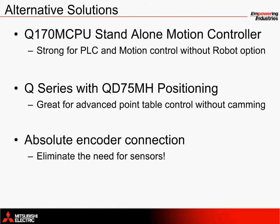For control without camming, the Q-Series QD75MH positioning controllers also utilize an SSC-NET 3 servo network for advanced point table control, servo parameter monitoring, and for multi-axis operations. Also, as an alternative to relying on photoelectric sensors to determine product placement, an absolute encoder connection can be added to the system for more intelligent control.